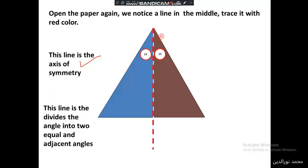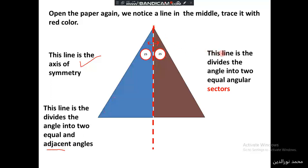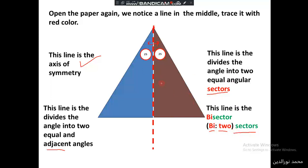This line is the line of symmetry, and it divides the angle into two equal and adjacent angles. We say adjacent since they have the same vertex, a common side, and they lie on either side of their common side. This line divides the angle into two equal angular sectors. The prefix 'bi' means two, so we have two equal sectors — and this line is called the bisector.